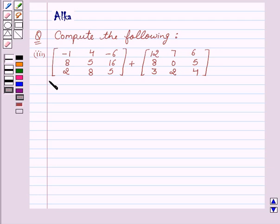Our two given matrices are: minus 1, 4, minus 6, 8, 5, 16, 2, 8, 5, and the second one is 12, 7, 6, 8, 0, 5, 3, 2, 4.